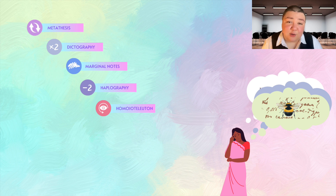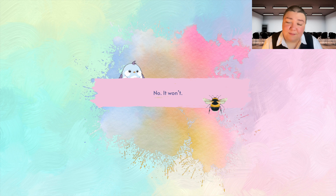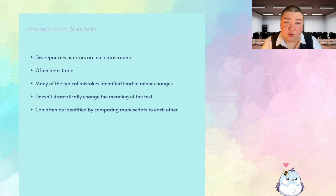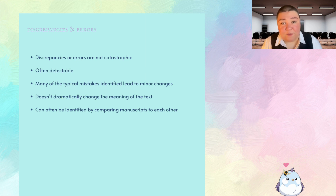When we step back and consider these errors and imperfections of scribal work, we might come away feeling trepidation. How can we trust the copies we have today? If one scribe was distracted by a bird flying by the window, will he miss a sentence and change the entire story of Moses? The answer is no — the discrepancies or errors are not catastrophic and are often detectable. Many of the typical mistakes identified lead to minor changes and don't dramatically change the meaning of the text. These can often be identified by comparing manuscripts to each other.